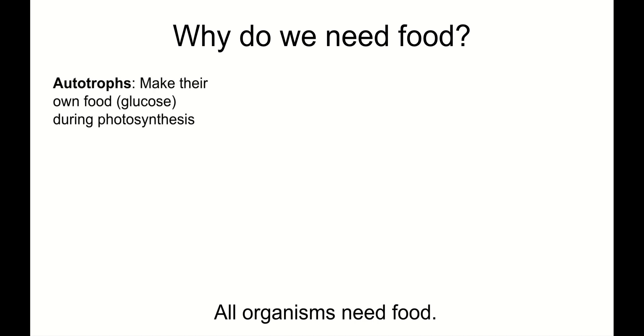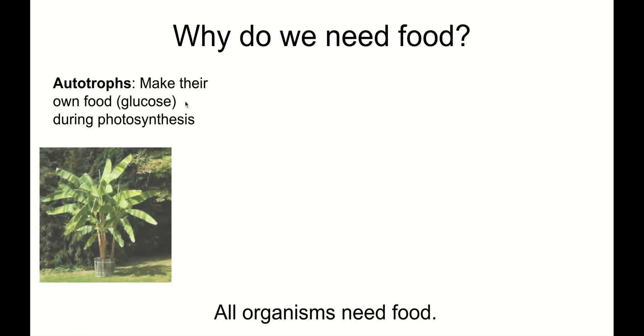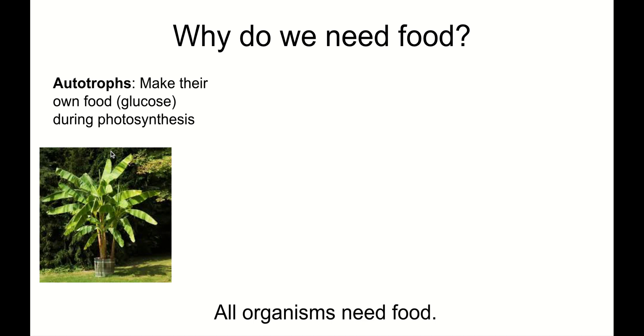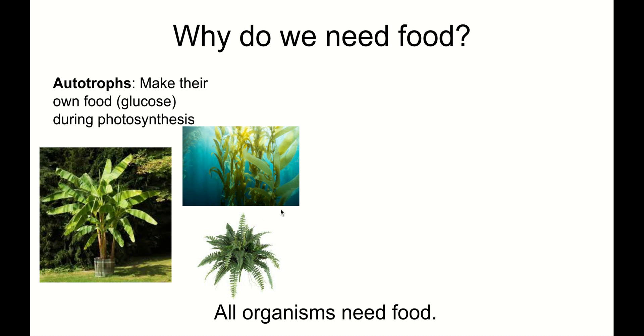Some organisms can make their own food. These are called autotrophs, and this is what you just learned about. Autotrophs, plants, make their own food during photosynthesis. Their food is glucose. Autotrophs is a category that includes plants like the banana tree, the fern, and algae, like this kelp you see growing underwater. Plants can do photosynthesis underwater.